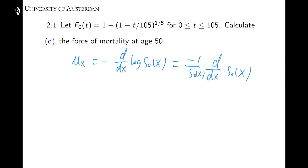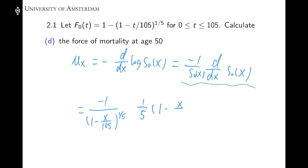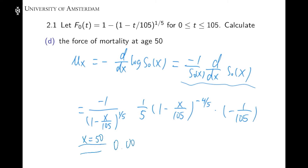Now we need to calculate the force of mortality. Using this formula, it is negative 1 over S0(x), where S0(x) equals 1 subtract (x/105) to the power of 1/5. We then compute the derivative using the chain rule. If we plug in x equal to 50, we get our final answer: 0.0036.